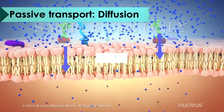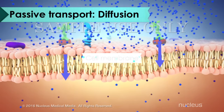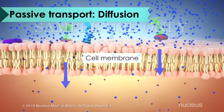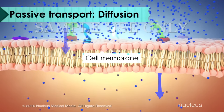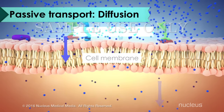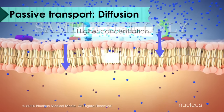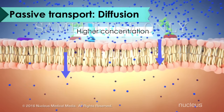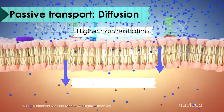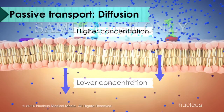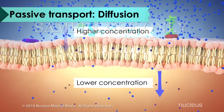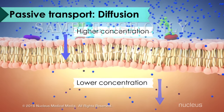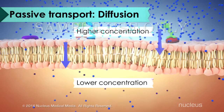For example, diffusion is a passive process in which particles move either into or out of the cell from an area of higher concentration to an area of lower concentration. The cell doesn't use any energy when this happens.